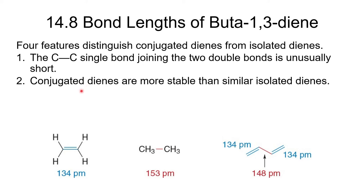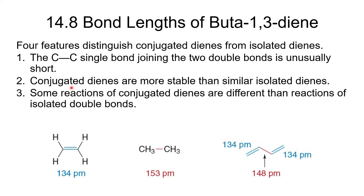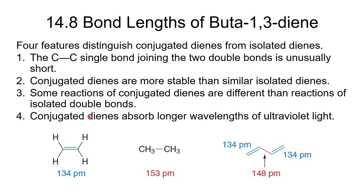Three other unusual features of conjugated dienes compared to isolated dienes: they are more stable, they give different products in certain reactions such as electrophilic addition, and they absorb longer wavelengths of ultraviolet light. This last property explains why lycopene absorbs so far into the visible spectrum, making it appear red.